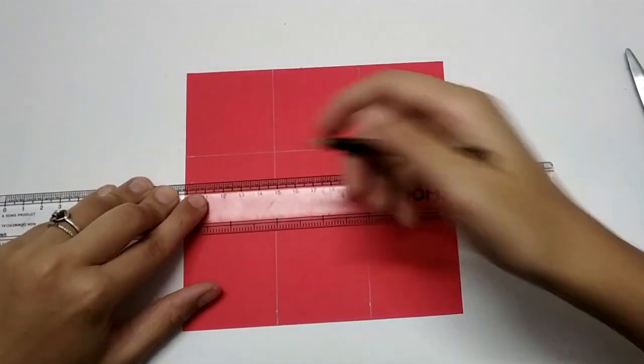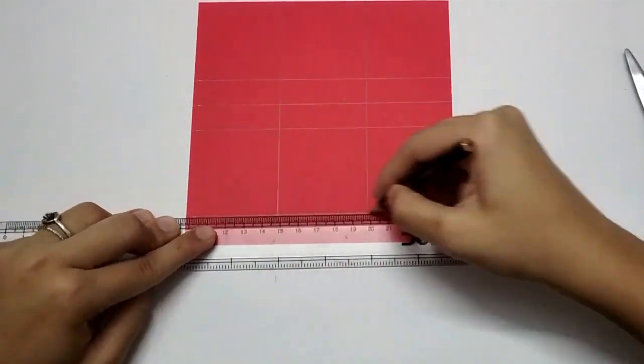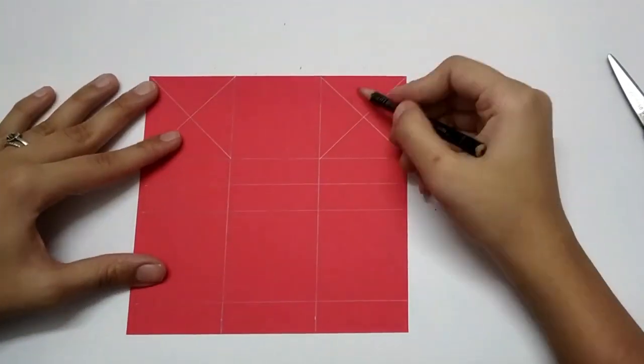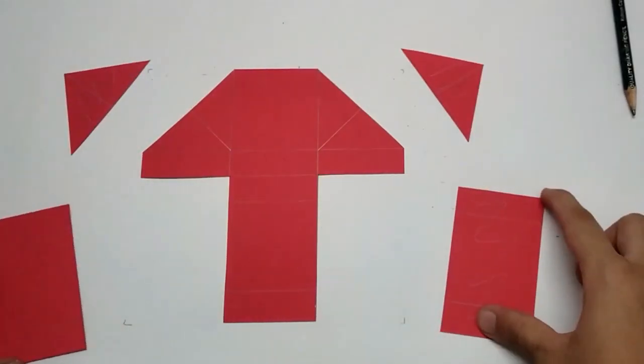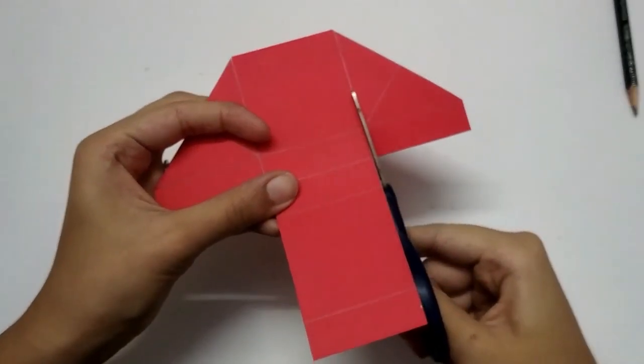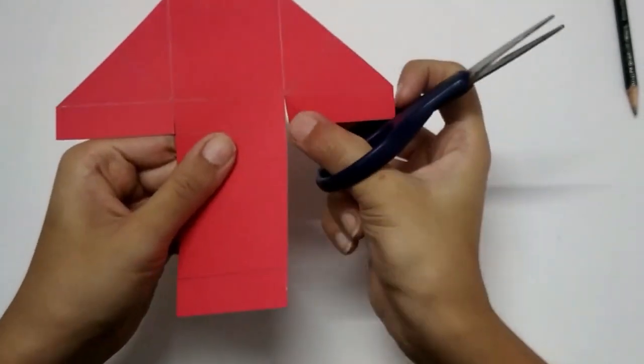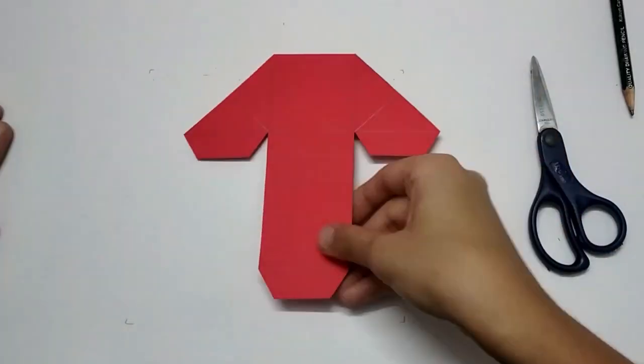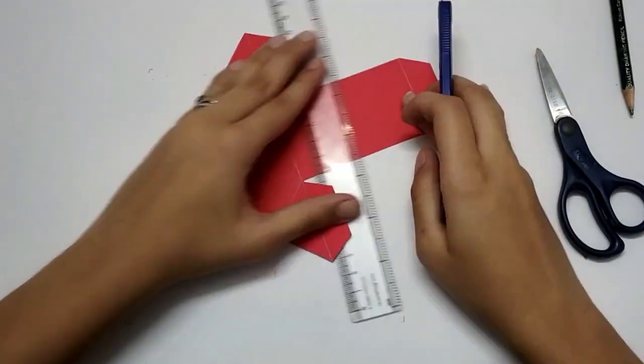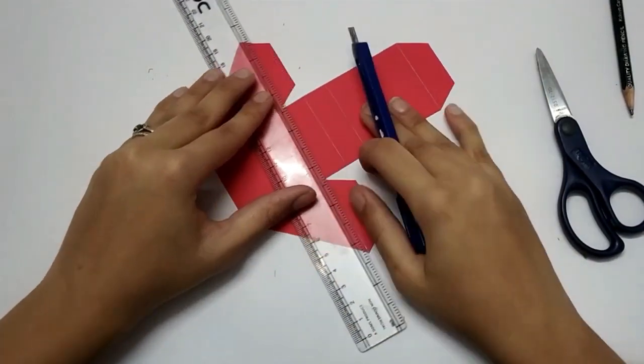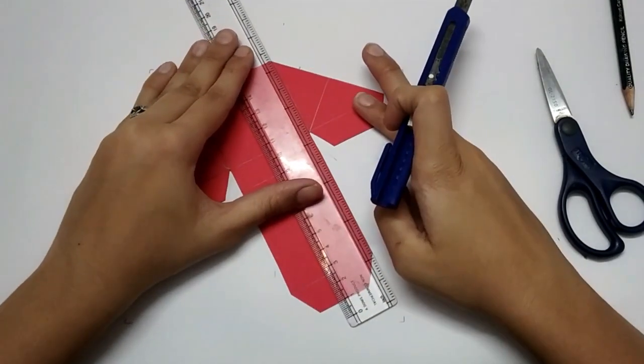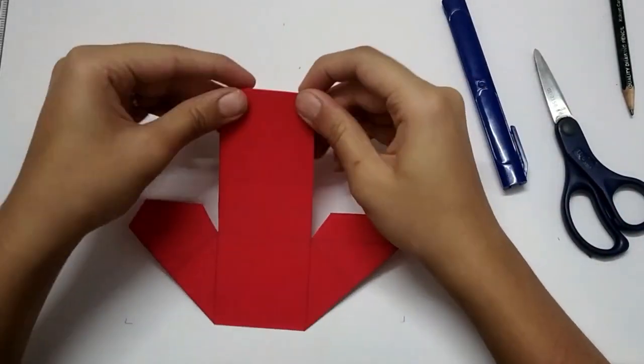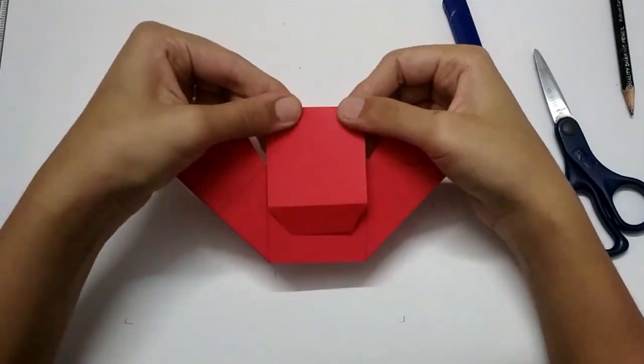Now take scissor, cut it slightly and make diagonal at edges. Now take cutter. You don't have to cut, just slightly mark it so that it could bend easily. Bend each line like I have shown.